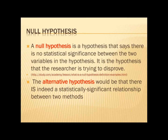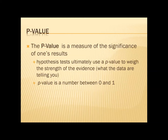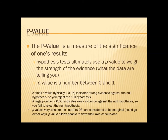When you reject the null hypothesis, you must accept or look for an alternative hypothesis. The alternative hypothesis states that there is a statistically significant relationship between two methods, measurements, variables, or data sets. One of the things we also need to look at is the p-value. The p-value is a measure of the significance of a result — hypothesis tests use it to weigh the strength of the evidence the data are telling you. It is a number between zero and one; the smaller the p-value, the more important that evidence.